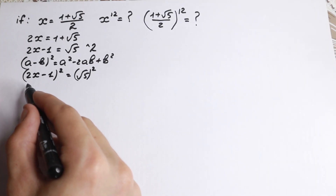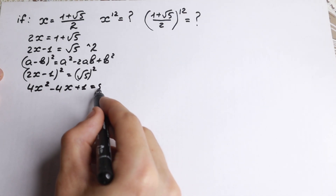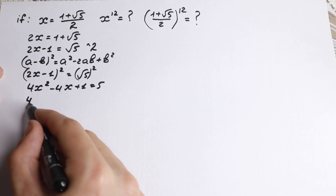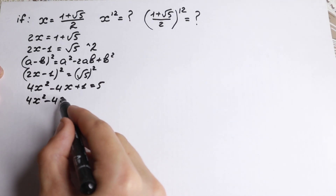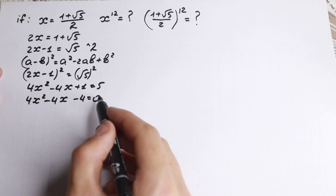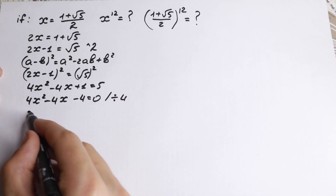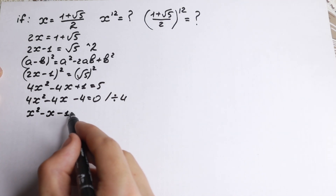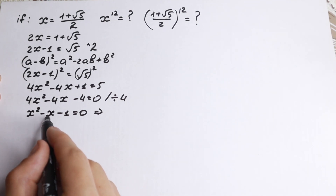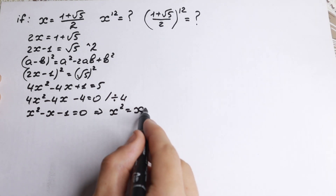Raising (2x minus 1) to the second power gives us 4x squared minus 4x plus 1 equal to 5. This looks like a quadratic equation. Bringing terms to the left hand side: 4x squared minus 4x plus 1 minus 5 equals 0, which is 4x squared minus 4x minus 4 equals 0. Dividing both sides by 4, we get x squared minus x minus 1 equal to 0. From here, bringing x and 1 to the right hand side, we get x squared equal to x plus 1.